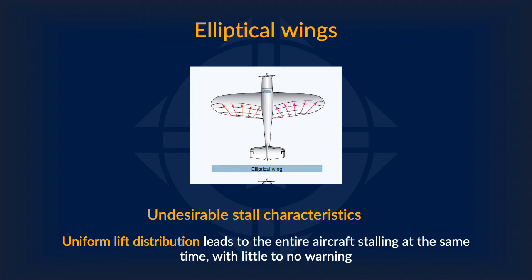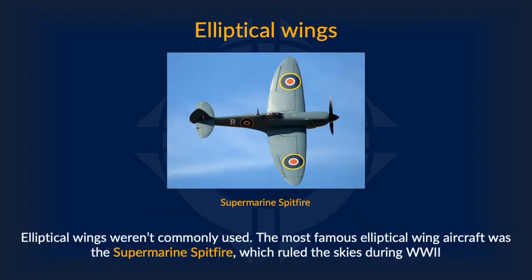This is due to the fact that the uniform lift distribution means lift is produced pretty uniformly across the wing. If stalling occurs, the entire wing stalls at once since the entire wing is generating lift, and this can quickly lead to a crash. Elliptical wings weren't used very much at all. The most famous use was probably the Supermarine Spitfire used by the British in World War II, which ruled the skies for a while.